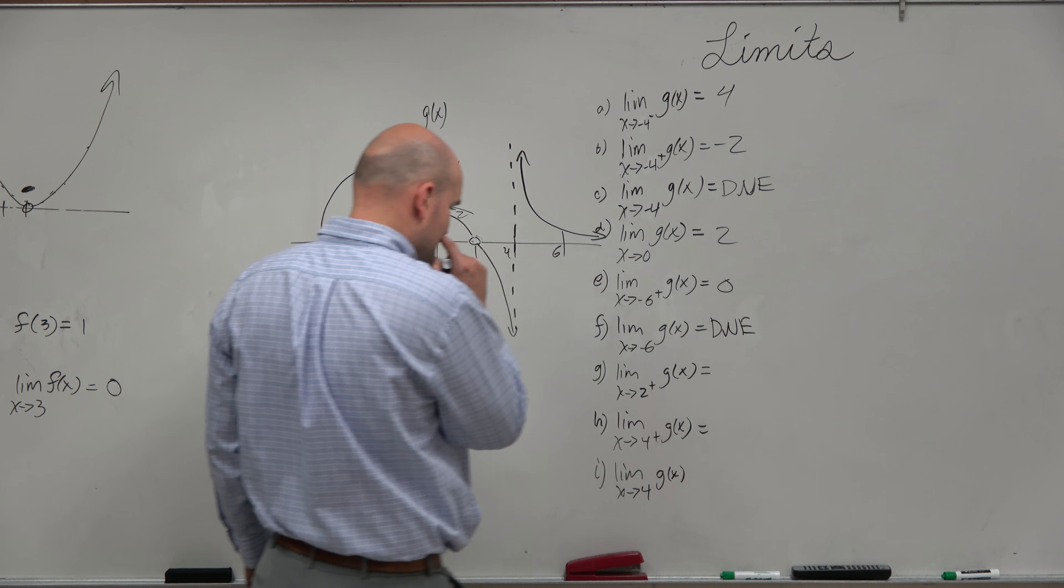2 from the right. So as we're approaching the value of 2 from the right, now again, here's a hole. But it doesn't matter if it's a hole. It doesn't matter if there's a point there. We're looking for the value which it's approaching, which is 0.